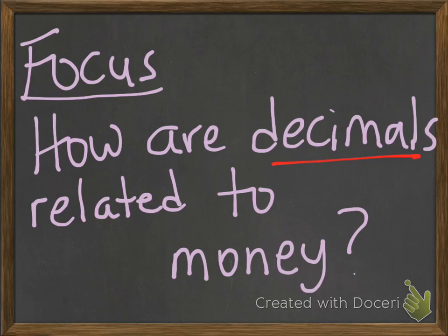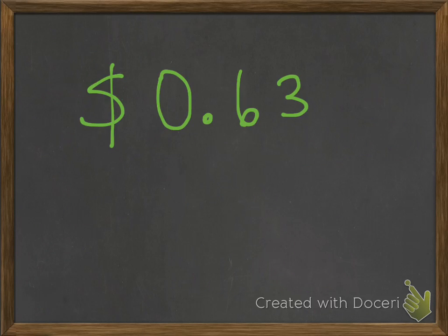Our focus is: how are decimals related to money? Let's say I give you this right here. How do you read this money amount? You should say 63 cents. Even though there's a dollar sign here, you're still going to say it's 63 cents. Now, is this more or less than one dollar? Correct — it is less than one dollar.